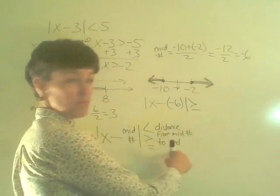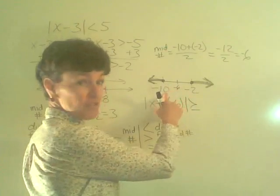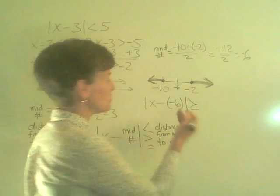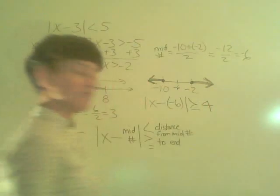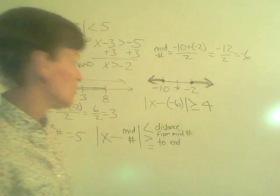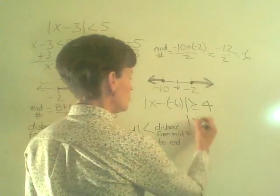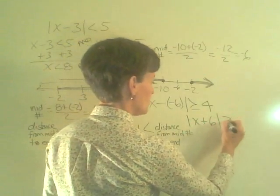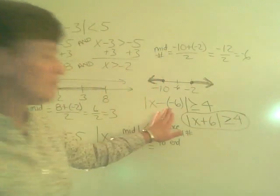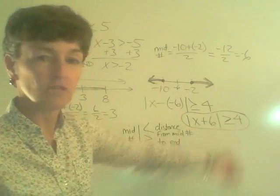Now I need the distance from the middle number to either end. The distance from negative 6 to negative 10 is 4 units, and the distance from negative 6 to negative 2 is also 4 units — they need to be the same, which is why it's the middle number. Remember, a distance is never negative; it's always positive. So cleaning up the double negative sign, this graph would be written as the absolute value of x plus 6 is greater than or equal to 4.